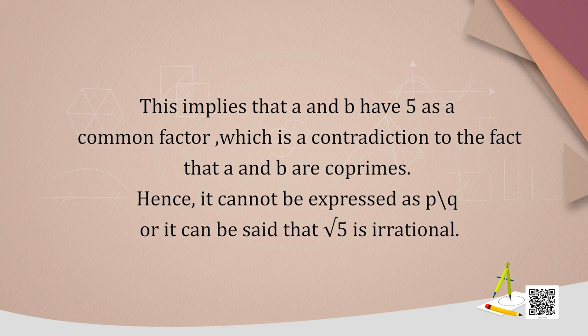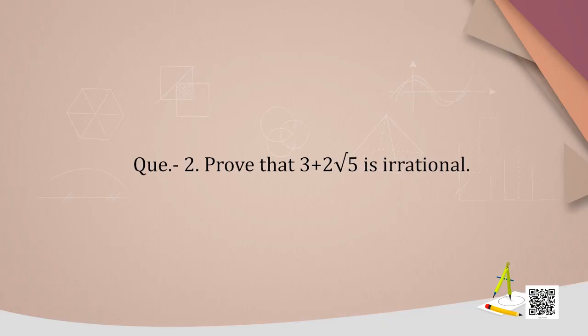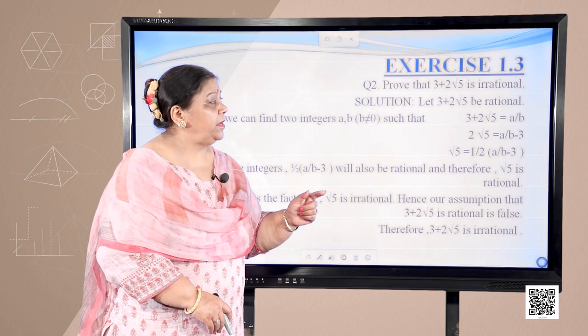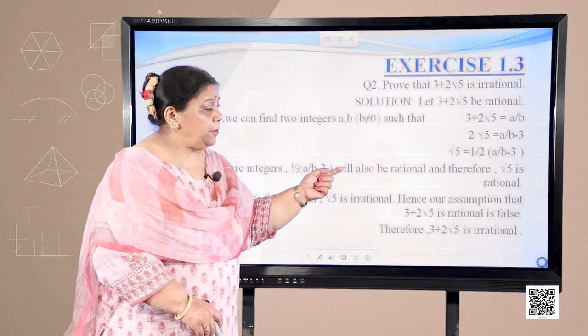Hence √5 cannot be expressed as p upon q, and therefore √5 is irrational. Now let us look into another question: prove that 3 + 2√5 is irrational. Let 3 + 2√5 be rational. Therefore we can find two integers a and b, b not equal to 0, such that 3 + 2√5 = a/b. So 2√5 = a/b − 3.